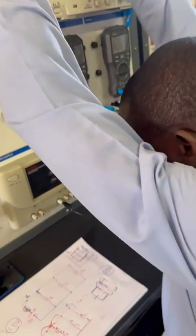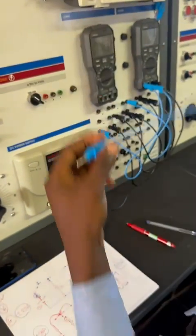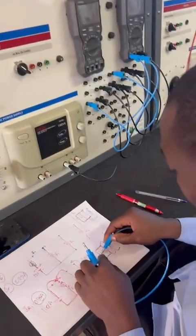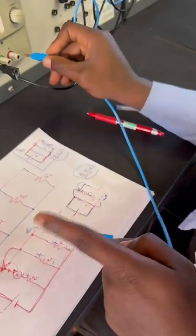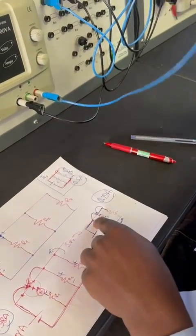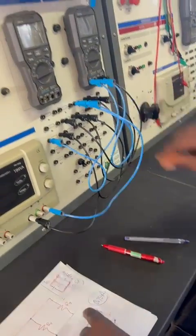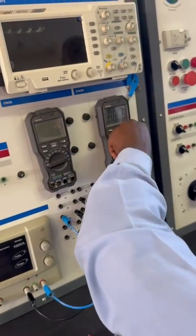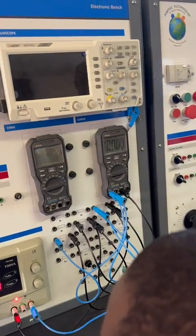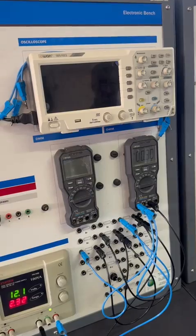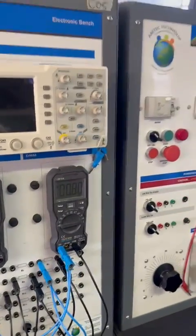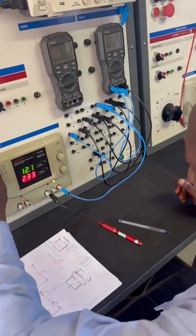Then we still have to deal with, from the positive of the supply, it goes to positive of R1. So I'm just going to switch this on quickly, switch on the power supply. And this measures, this gives us 0.8 for IR2. This is IR2.